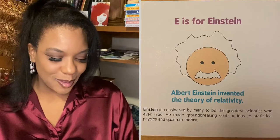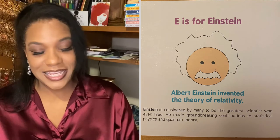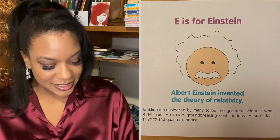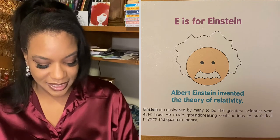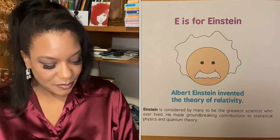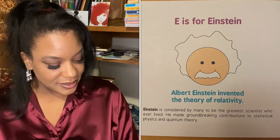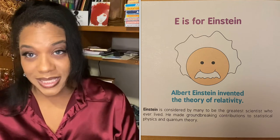E is for Einstein. Albert Einstein invented the theory of relativity. Einstein is considered by many to be the greatest scientist who ever lived. He made ground-breaking contributions to statistical physics and quantum theory.